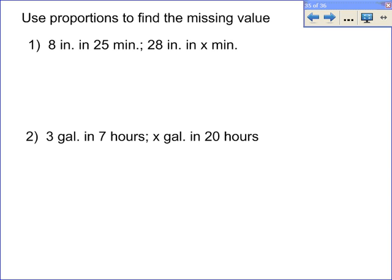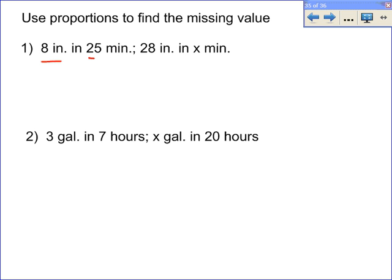On these two problems, you're asked to use a proportion to find the missing value. And these are just set up in a very specific way that makes it very easy to see the proportion. It basically gives you two scenarios.